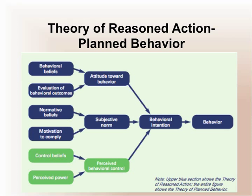The theory depicts and lays out those things that contribute to intentions — for example, attitudes toward the behavior, subjective norms, and perceived behavioral control. Each of those three major constructs in the middle column is comprised of smaller constructs: behavioral beliefs, evaluation of behavioral outcomes, normative beliefs, motivation to comply, control beliefs, and perceived power. Much of what we'll talk about today are these constructs — how we measure them and how we change them.